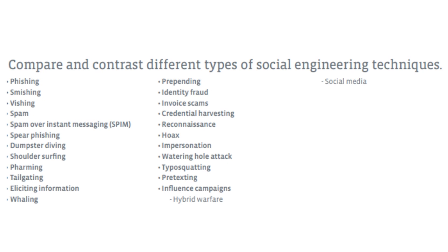Finally, we have influence campaigns, which operate on a bigger scale. These are hybrid warfare techniques using cyber and influence campaigns to manipulate people into believing something that may not be true, using propaganda often shared on social media. Threat actors use automated bots on platforms like Twitter and Facebook to influence public sentiment on contentious issues including political events, gun control, abortion, and much more.